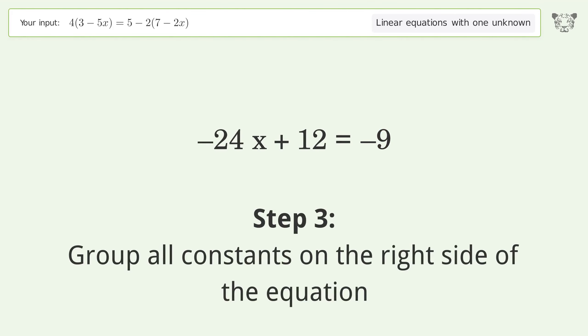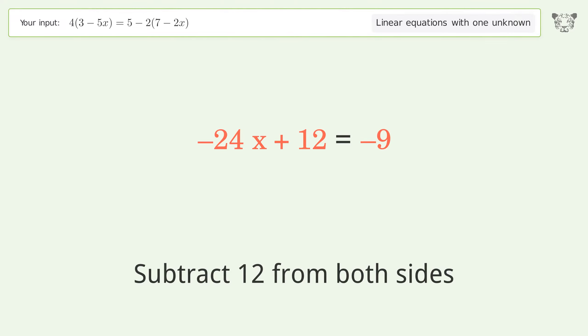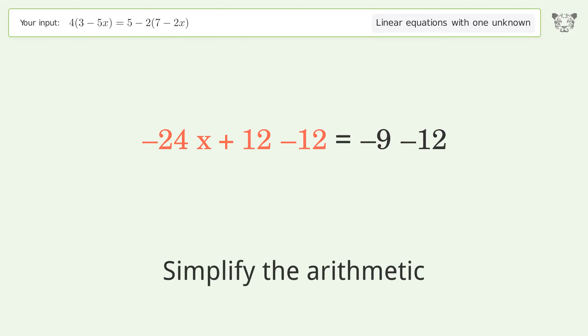Group all constants on the right side of the equation. Subtract 12 from both sides and simplify the arithmetic.